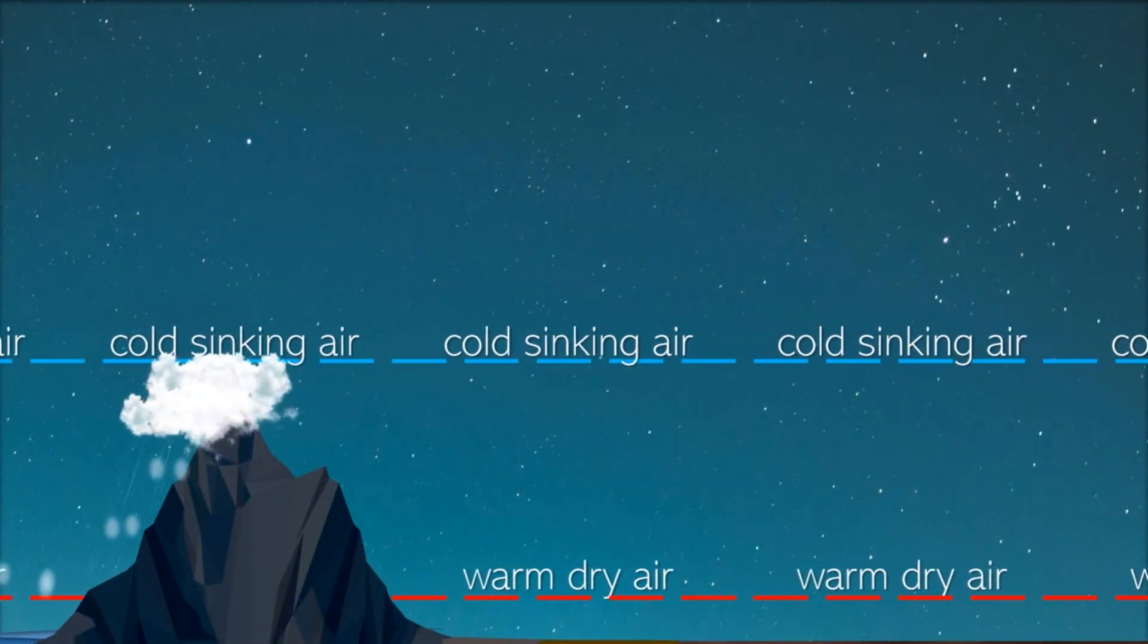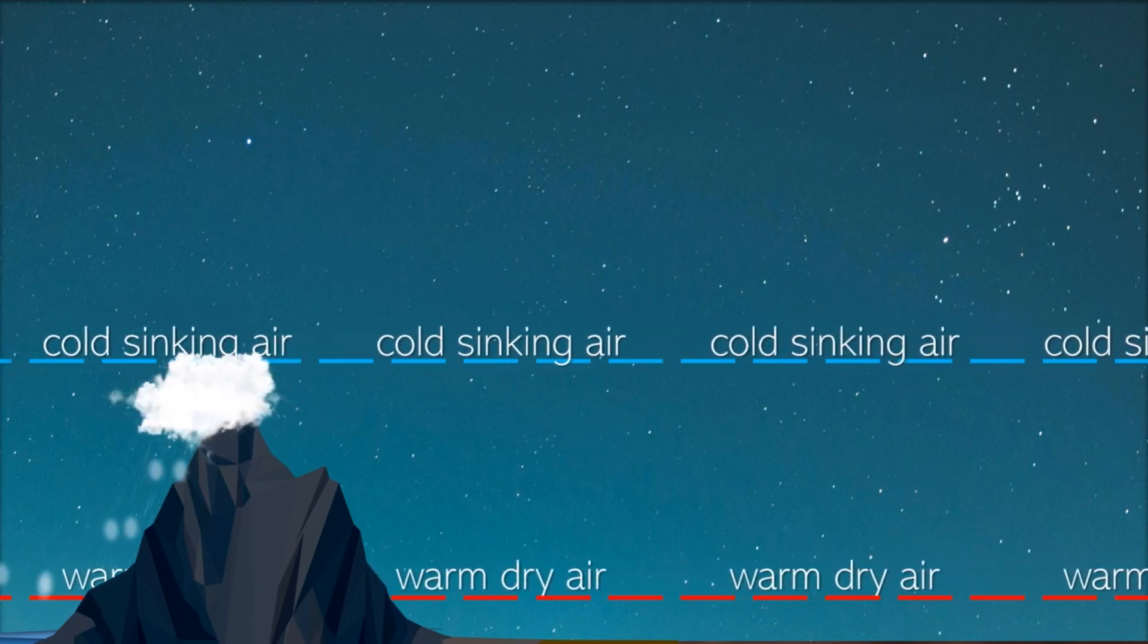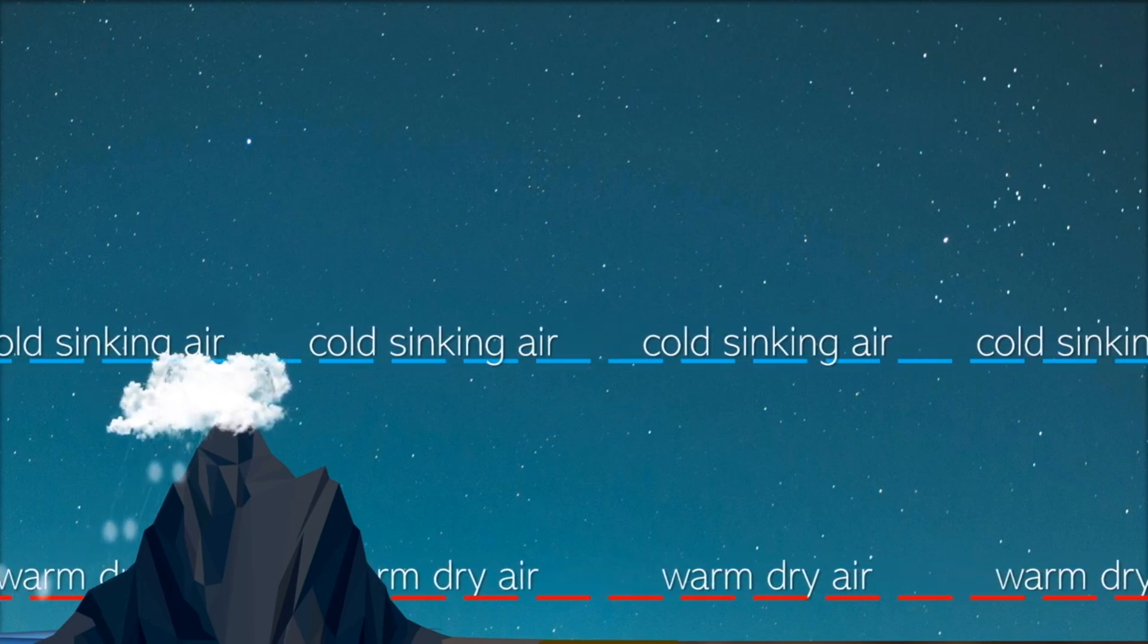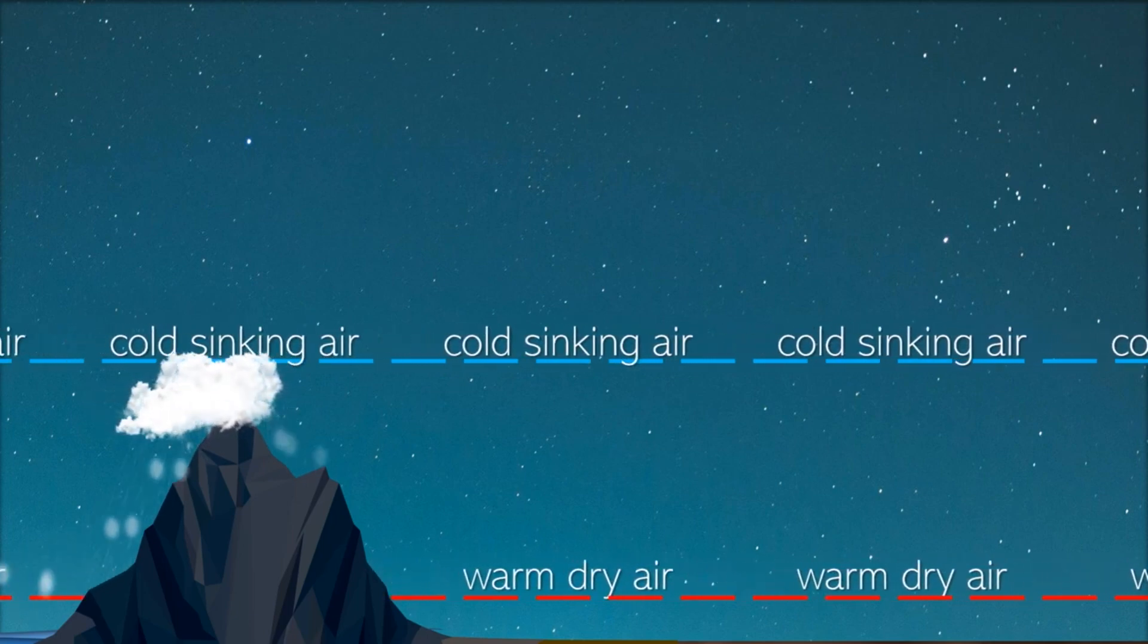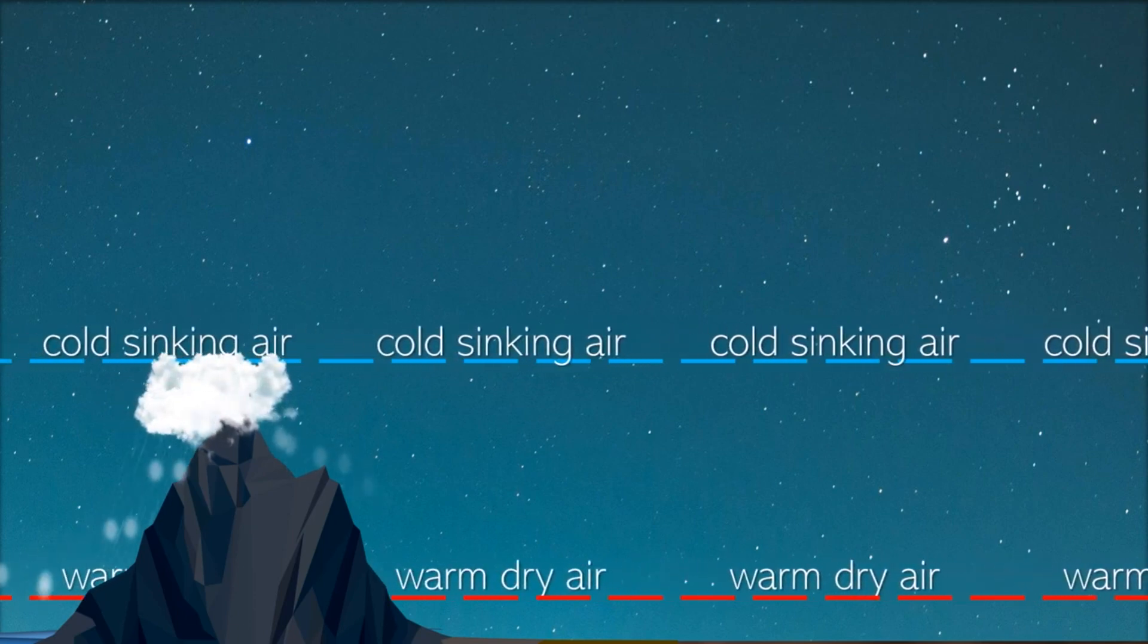Now, instead of a chain, imagine a stream of wind. Once it encounters a mighty mountain, it gets flicked up suddenly by the mountain on the windward side, creating relief rainfall. As it goes down on the leeward side, the clouds disappear and creates rain shadow.